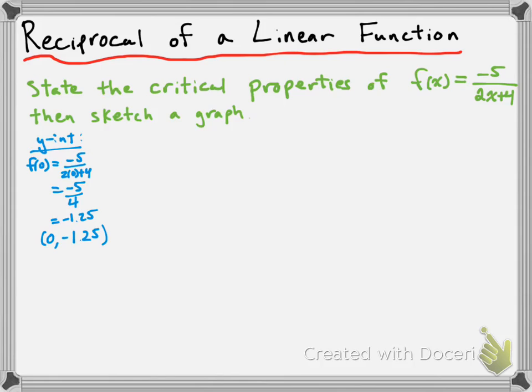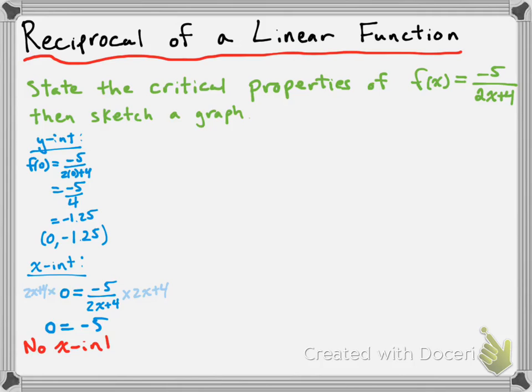Now let's do the x-intercept. The x-intercept occurs when y is equal to 0, so we substitute 0 in for f(x). We get 0 = -5 / (2x + 4). Multiplying both sides by (2x + 4) to get rid of the denominator, we get 0 = -5. This makes no sense — 0 can't equal -5 — which means there are no x-intercepts.